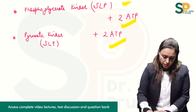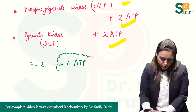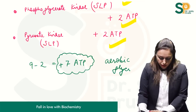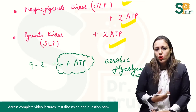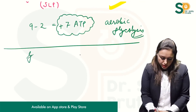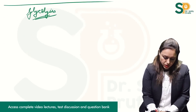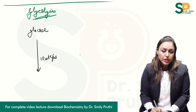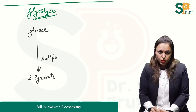So 9 minus 2: therefore the energetics of glycolysis is plus 7 ATPs, and this is for aerobic glycolysis. For aerobic glycolysis we are getting 7 ATPs. Now let us also talk about anaerobic glycolysis. In summary, 1 molecule of glucose via 10 steps gets converted to 2 molecules of pyruvate in aerobic glycolysis.